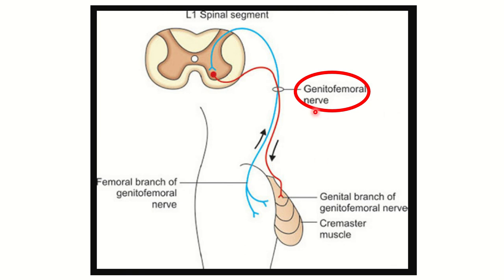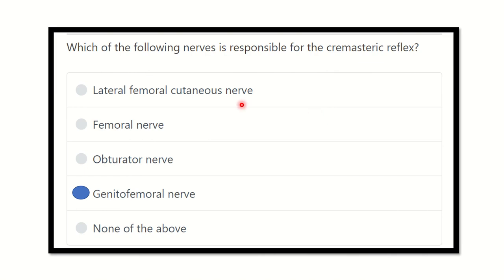Therefore, the genitofemoral nerve is responsible for the cremasteric reflex. The other options are incorrect: the obturator nerve is not located around the cremasteric area — it supplies the inner aspect of the thigh and passes through the obturator foramen, so it has no connection to the cremasteric muscle.